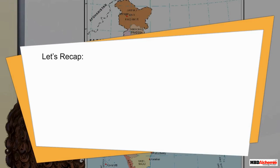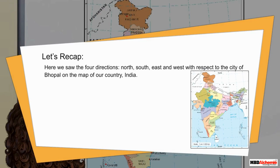Let's recap. Here we saw the four directions — north, south, east, and west — with respect to the city of Bhopal on the map of our country India.